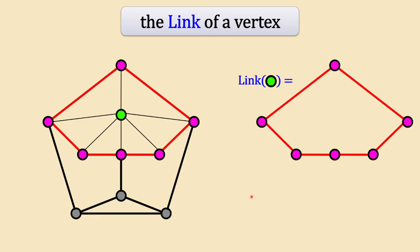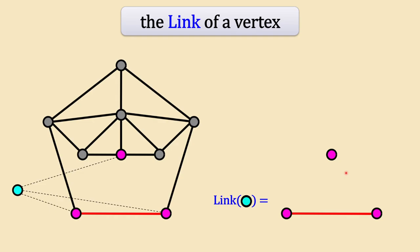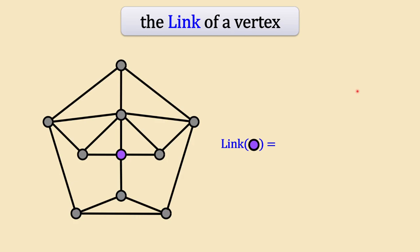Let's look at more examples. An aqua vertex connected to three pink vertices, where those three vertices have only one edge among them, has a link that is a disconnected three-vertex graph with one edge — the link does not have to be connected. A purple vertex connected to four vertices with two edges among them has that four-vertex, two-edge graph as its link.